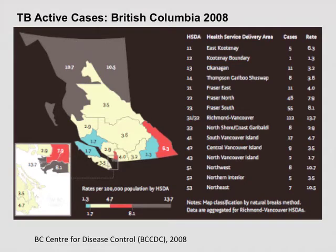Here's a map of British Columbia for 2008 showing active cases of TB. The highest rates in the province are seen in the lower mainland area. The higher proportion of cases up in the north with the aboriginal population have been a risk factor.